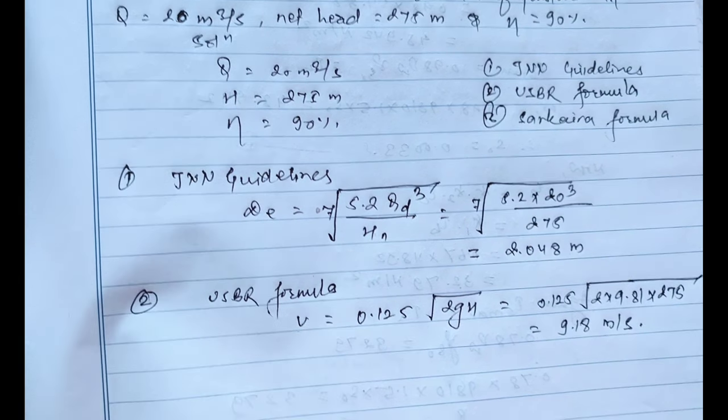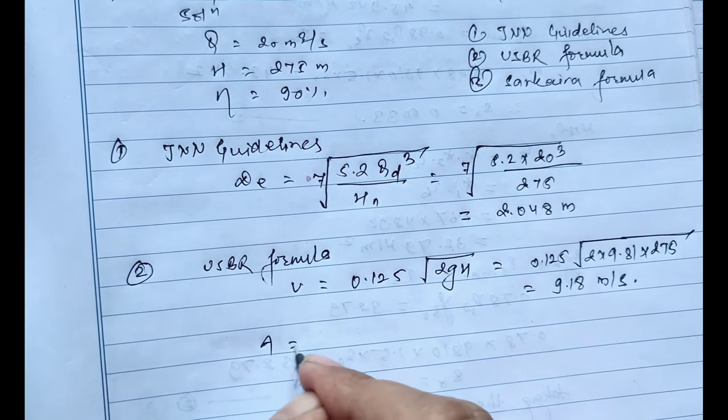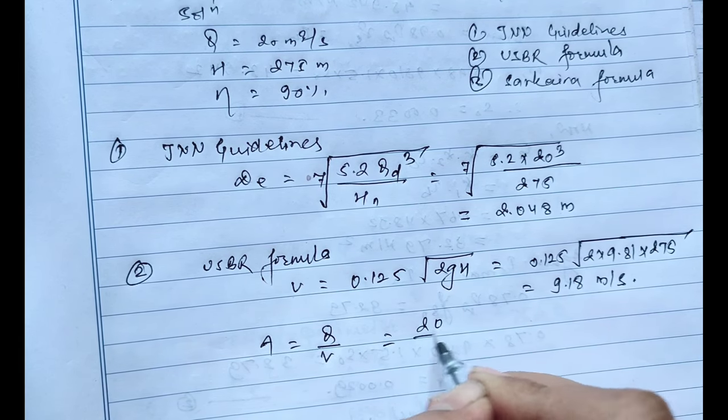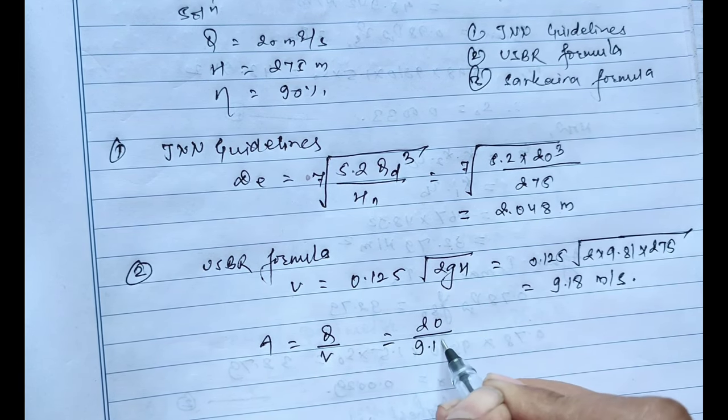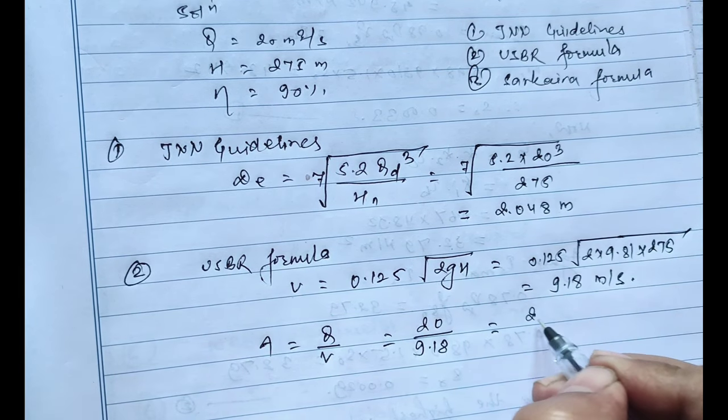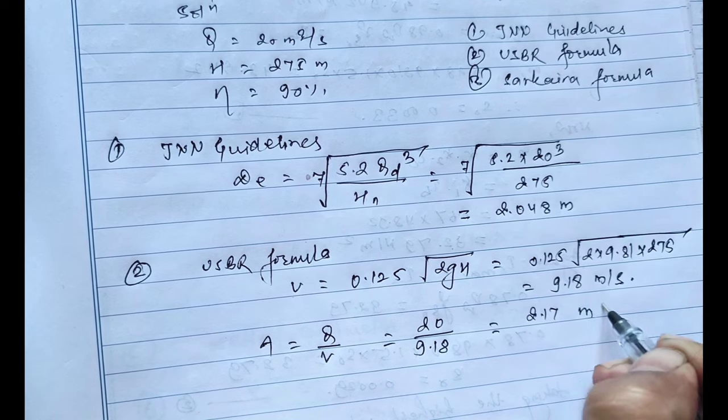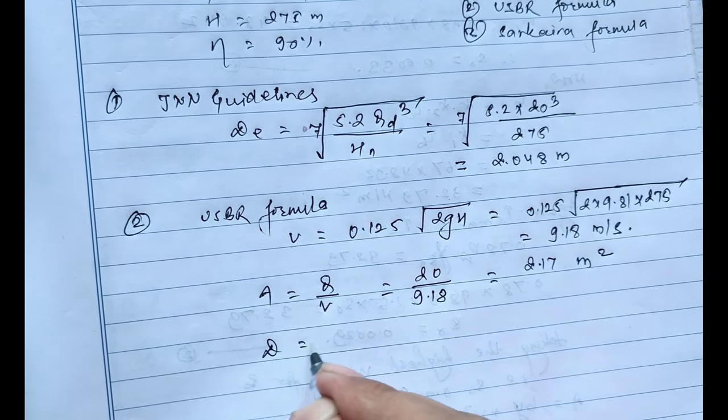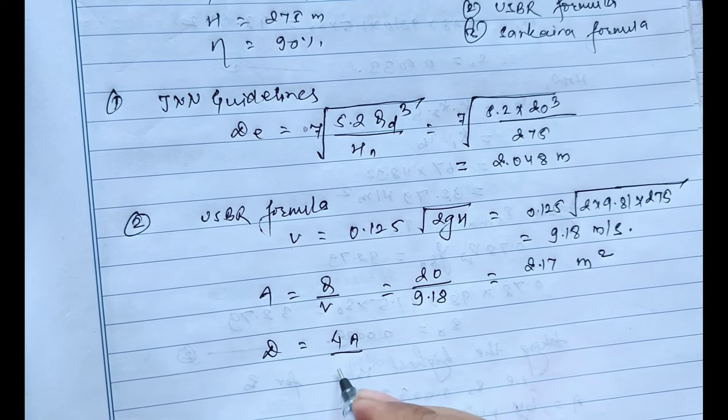After this, the area A equals Q by V where the design discharge is 20 and the velocity is 9.18. On solving this we'll get 2.17 meter square.